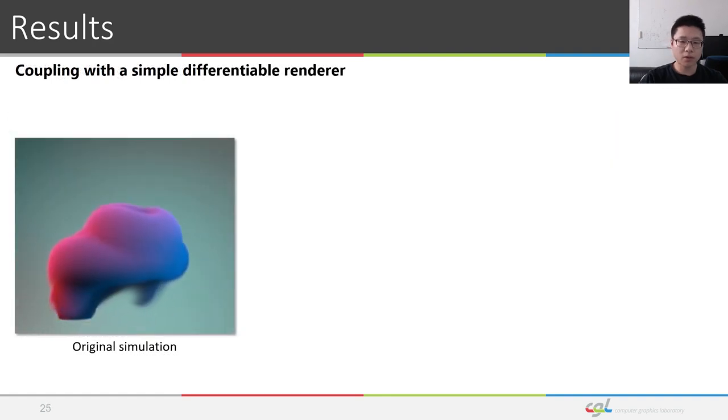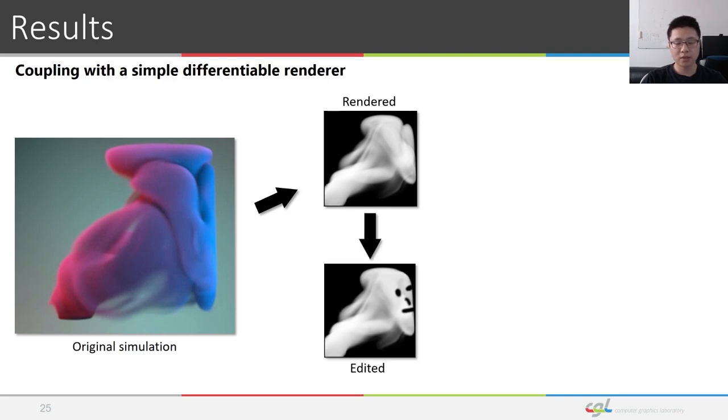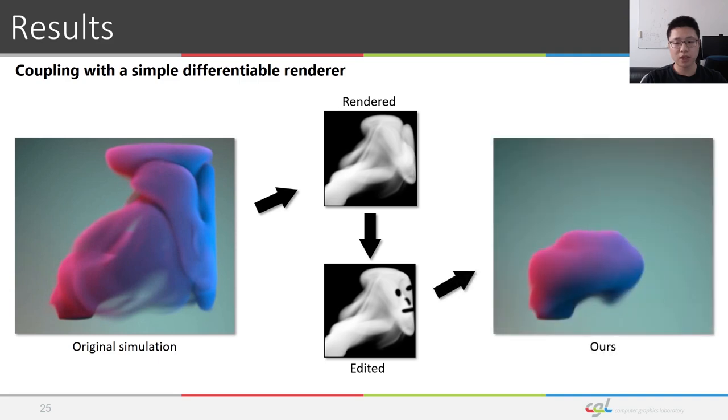We can also couple our method with a simple differentiable renderer. We design an initial simulation, visualize it with a simplified renderer. This allows the user to paint on the resulting rendering. The user can paint strokes to add and remove densities and use image warping tools to deform densities locally. The differentiability of the simplified renderer allows us to compute the gradients of the objective function to the renderer, making it compatible with our gradient-based optimization method.